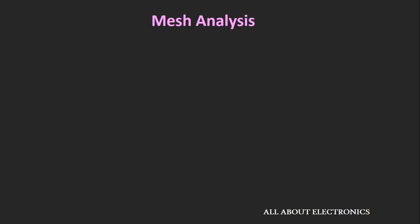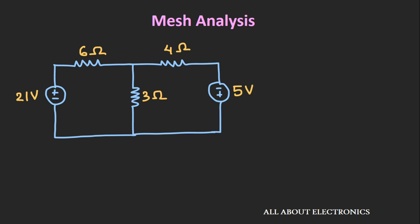We will understand this mesh analysis method using one example. Let's say we have been given one electrical circuit, and in this circuit we have been asked to find the current through all the resistors using the mesh analysis method. This mesh analysis method is nothing but applying Kirchhoff's law followed by Ohm's law at all the meshes in the given electrical circuit.